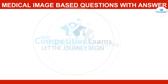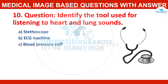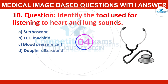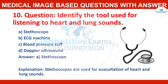Question number ten: identify the tool used for listening to heart and lung sounds. Options: stethoscope, ECG machine, blood pressure cuff, or Doppler ultrasound? Correct answer: stethoscope. Stethoscopes are used for auscultation of heart and lung sounds.